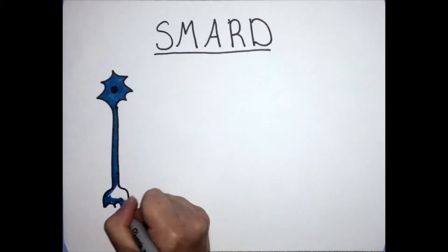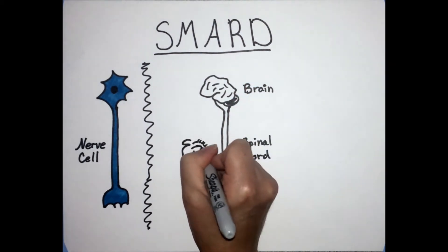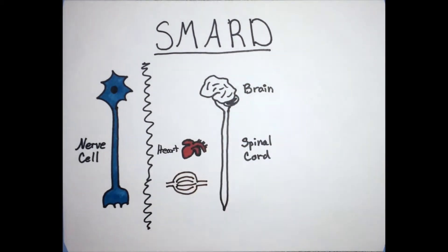SMARD is a disease that affects nerve cells. These are the cells that relay information from the brain through the spinal cord to different muscles in your body.